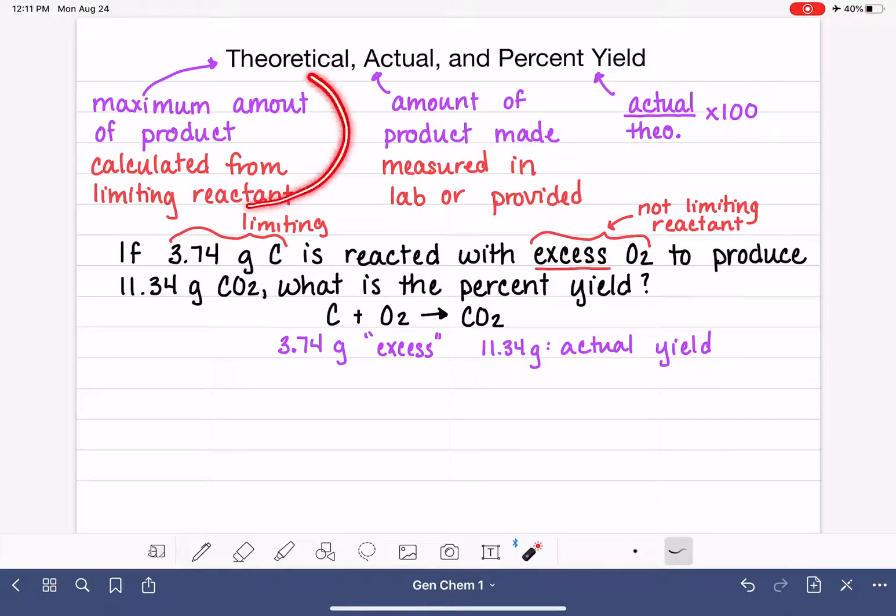The theoretical yield is the maximum amount of product calculated from the limiting reactant. We know that the limiting reactant is the carbon, 3.74 grams. So let's start by writing out that 3.74 grams of carbon. And basically all that we're going to be doing here is a conversion from carbon to CO2 to figure out what the maximum amount of CO2 is that we can make. So this is just a stoichiometry problem.